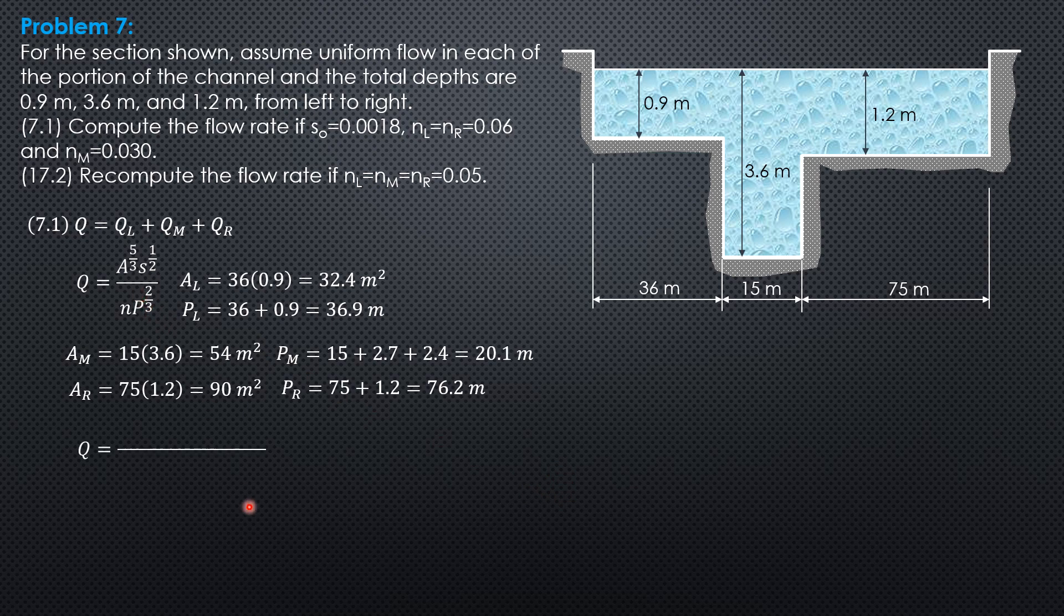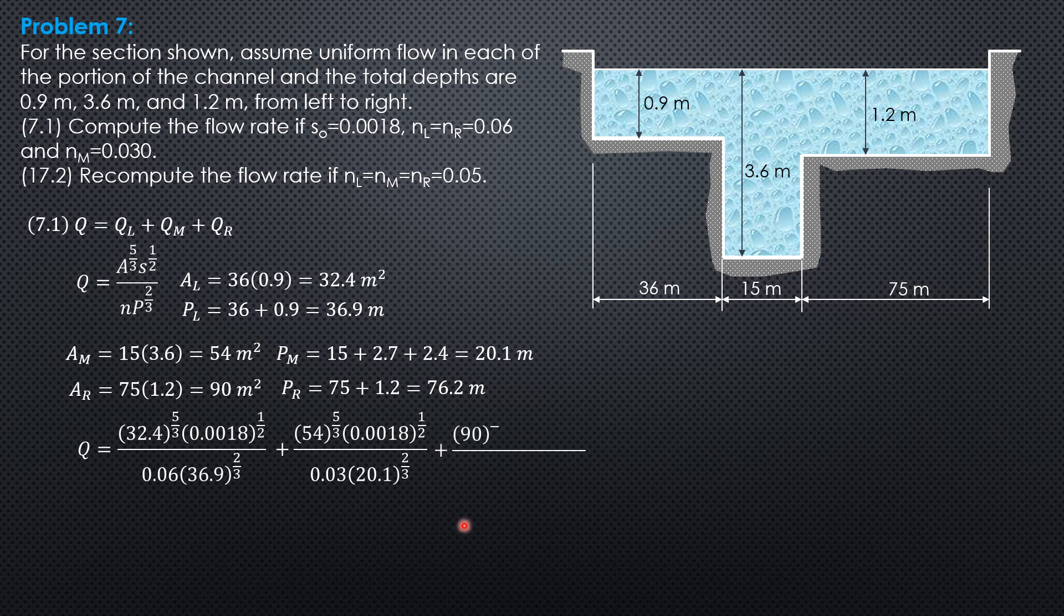Substitute into our formula: Q equals Q at the left, 32.4 raised to 5/3, then 0.0018 to the 1/2 over N 0.06 for the left channel times perimeter 36.9 to the 2/3. For the middle channel, 54 to the 5/3, 0.0018 to the 1/2 over N 0.03 for the middle channel.